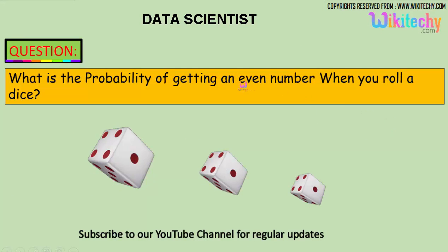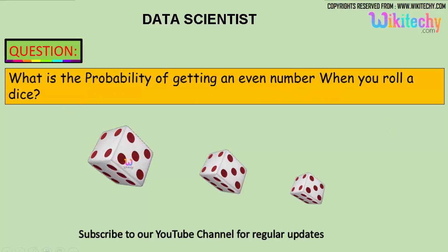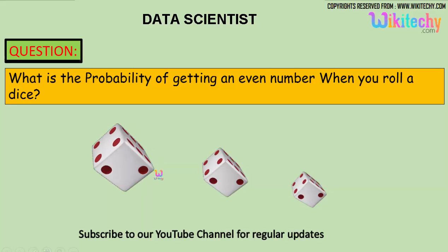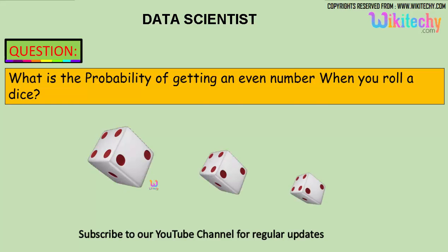So what is the probability of getting an even number when you roll your dice? The dice will have six numbers: one, two, on the other side three, this one is five, four, and six. So we got six numbers.